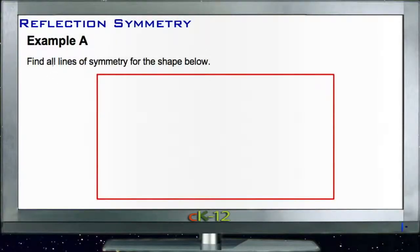Okay, Example A asks us to find all the lines of symmetry for the shape below. So what we have is a rectangle, and we actually had a rectangle in our examples, so this one should be pretty easy.